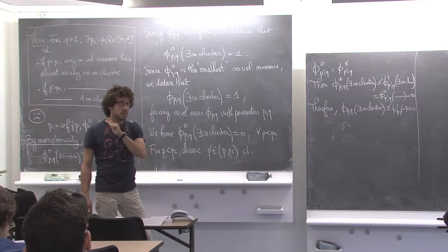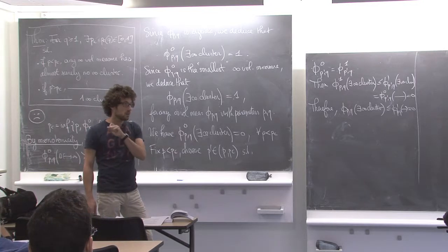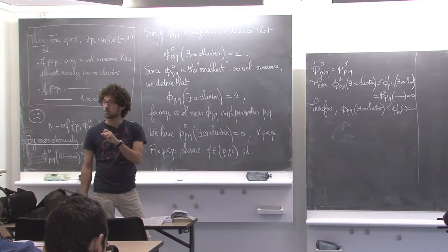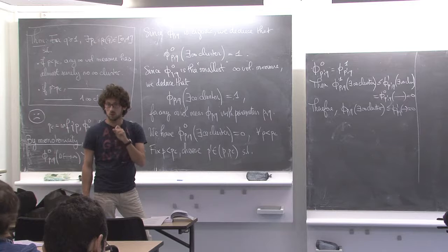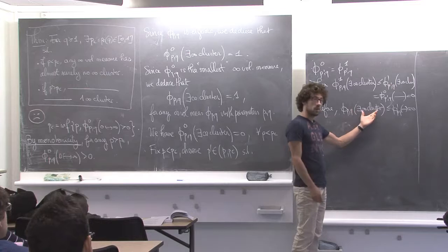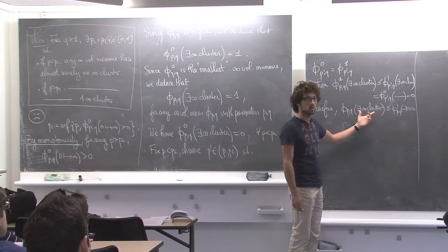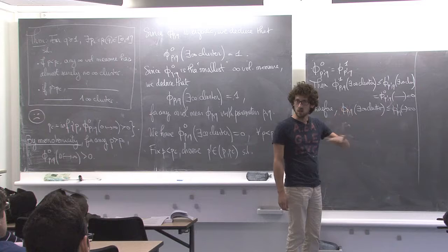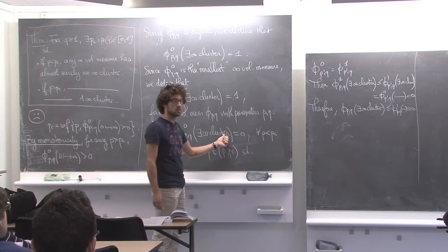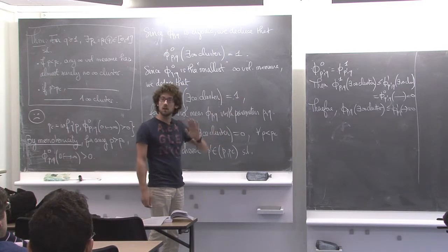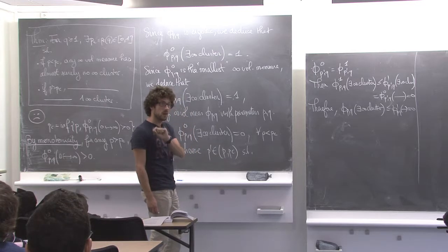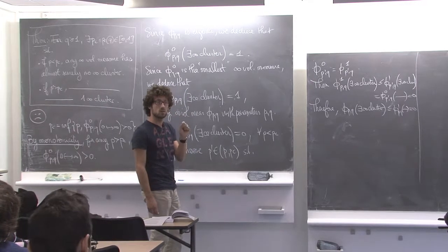But notice that I never told you that every infinite volume measure was invariant under translation, and in fact it's a priori not true. So this would not imply a priori that there is no infinite cluster — it's not because 0 is not connected. You could easily relate the two: you could take any x connected to infinity and get the same conclusion. But my point is that infinite volume measures have no reason to be translation-invariant a priori.